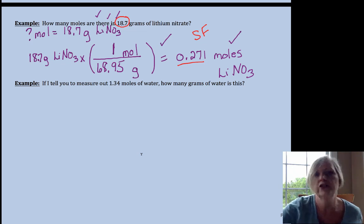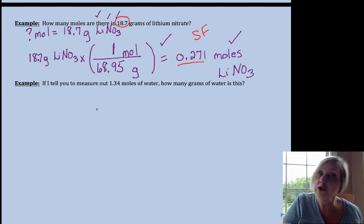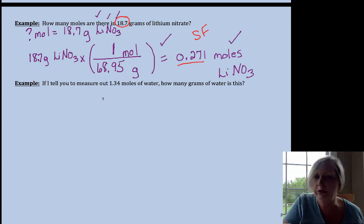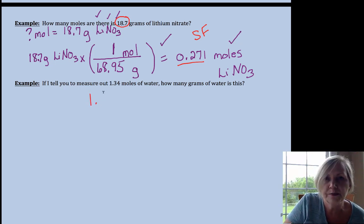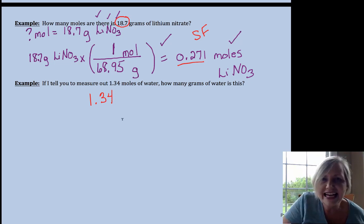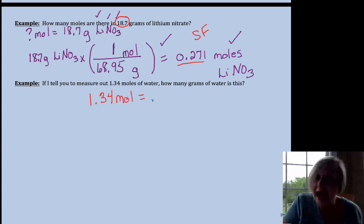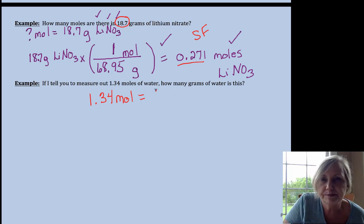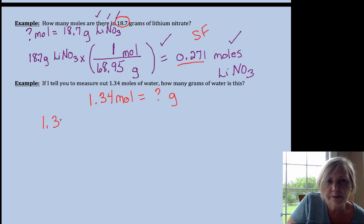Okay, let's try another one. If I tell you for an experiment you need 1.34 moles of water, you don't have any special mole balance in the lab to weigh that out, so we have to convert that to grams. Remember that laboratory environment, mass to moles use molar mass. This is a one-step problem, so 1.34 moles of water.